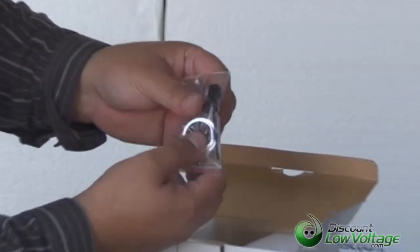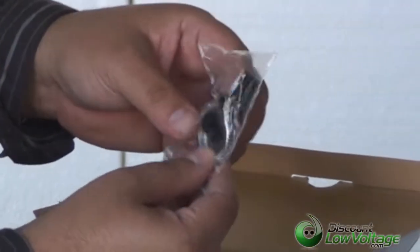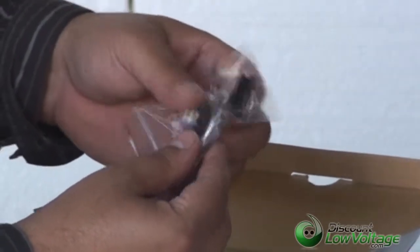Looks like we got some tools here. Some items you might need that will help you out when you install the auto-iris lens.